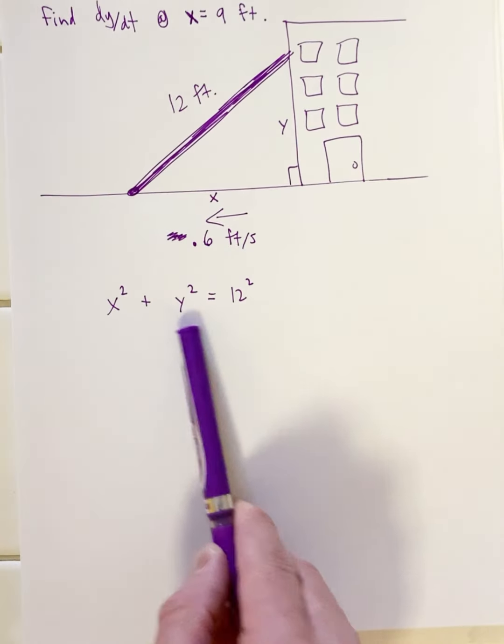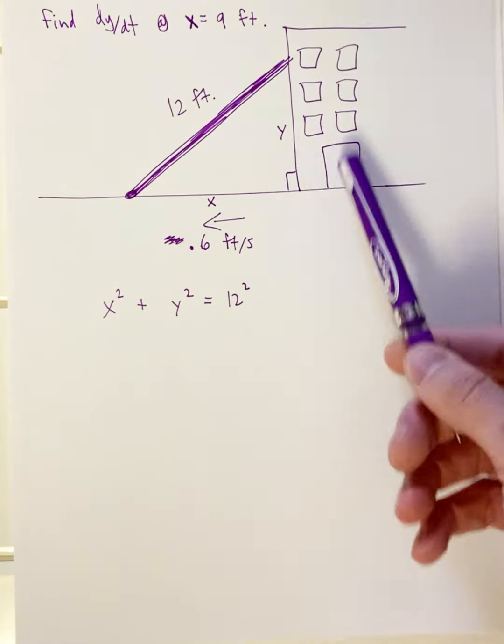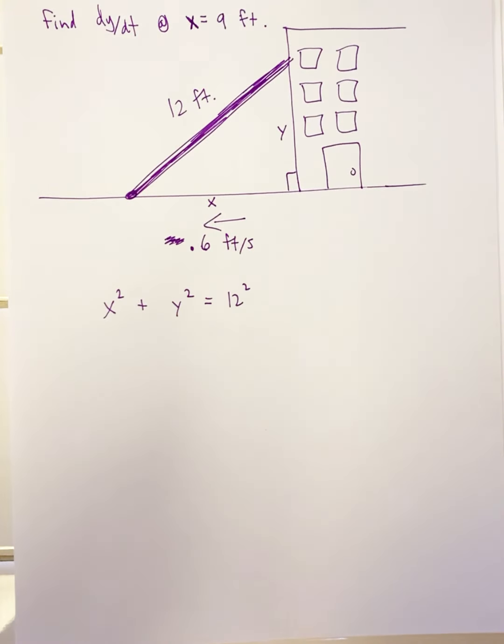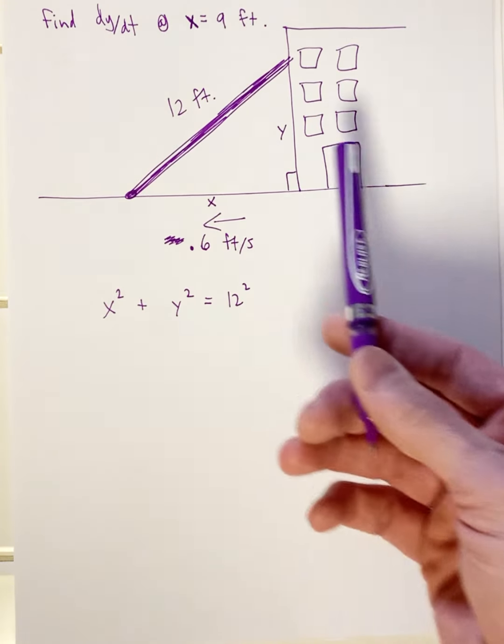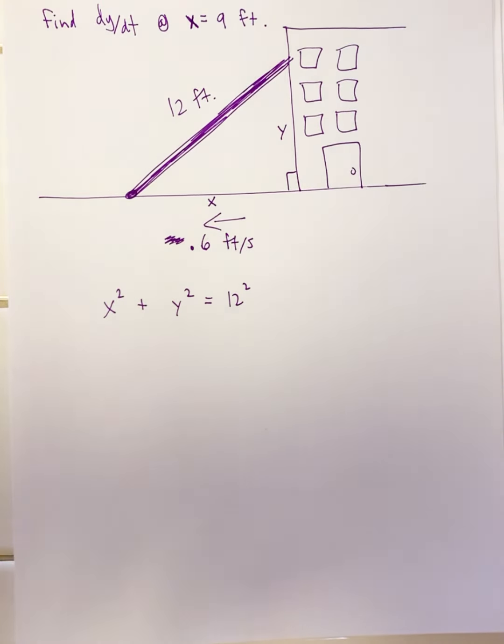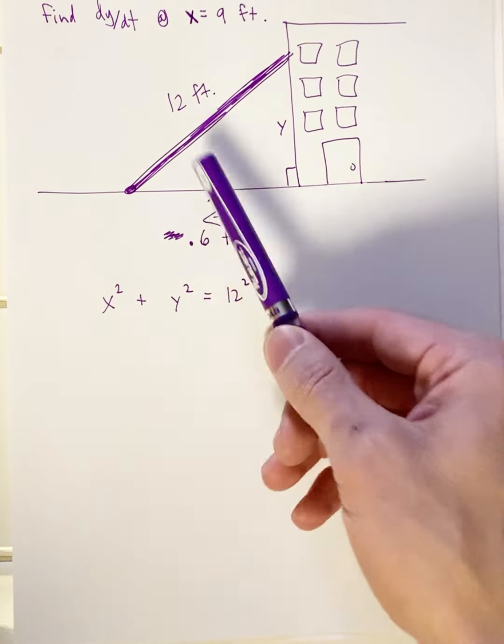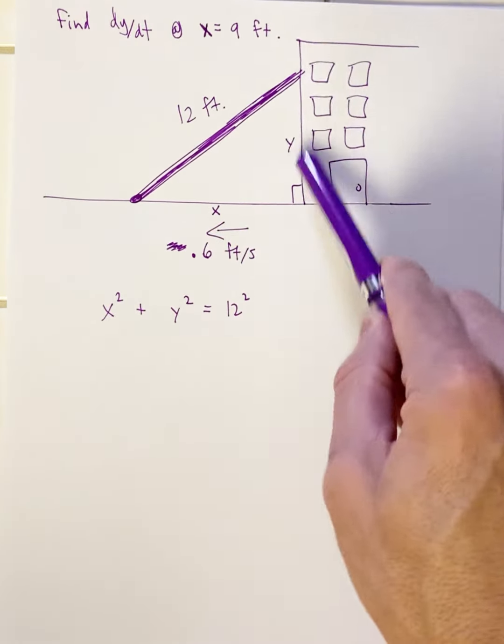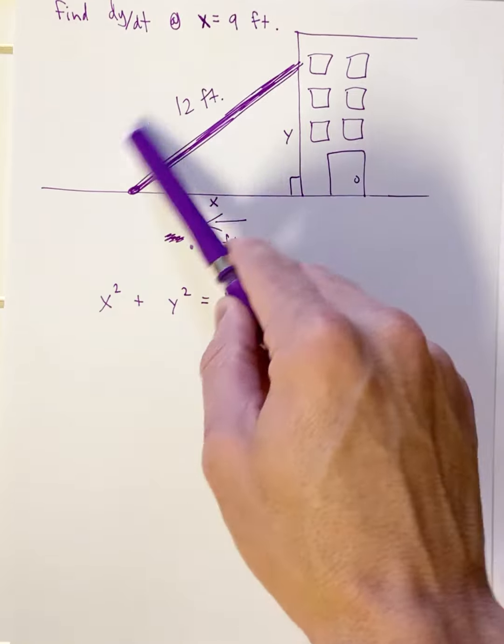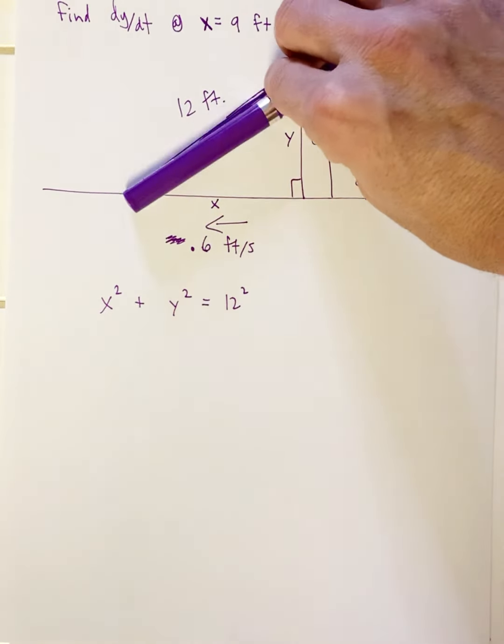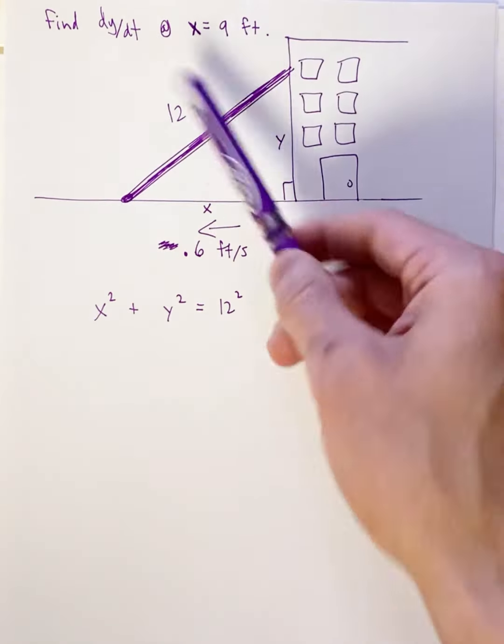That's the equation we're going to use to relate x, y, and 12, and we know why - it's the Pythagorean theorem. You know, middle school right? Pythagorean theorem: a squared plus b squared equals c squared. The 12 is always 12 because regardless of how the ladder is positioned, it's always going to be 12 feet.